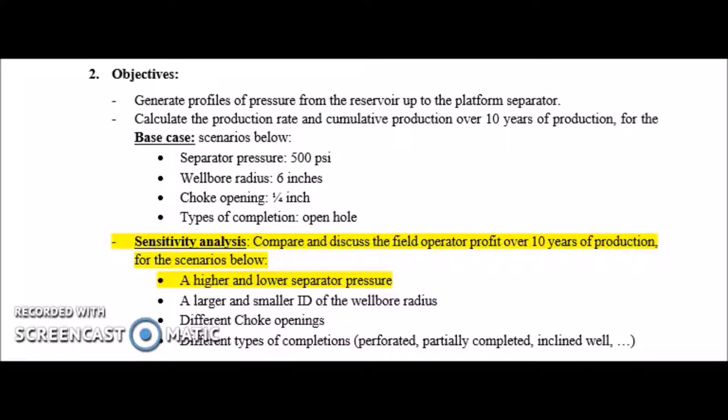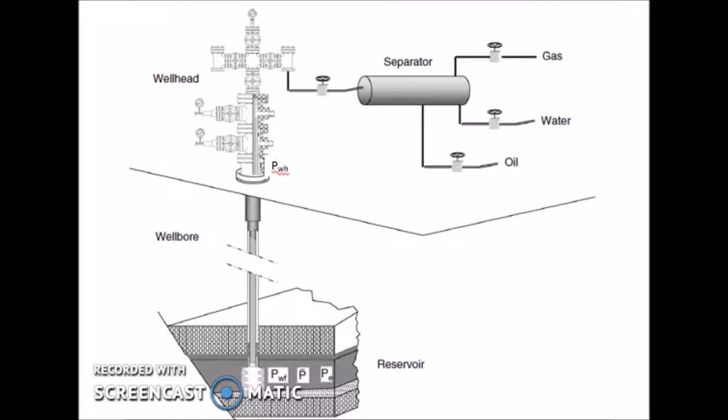For part of the sensitivity analysis, we compared and discussed the effect higher and lower separator pressures have on the cumulative production over the course of 10 years in the field. Our hypothesis was that in most cases, a lower separator pressure will yield greater production and profits. We said that because fluid flow is governed by pressure differential, therefore we want a higher bottom wall pressure and a lower pressure at the top of the well, which can be accomplished by lowering separator pressure.